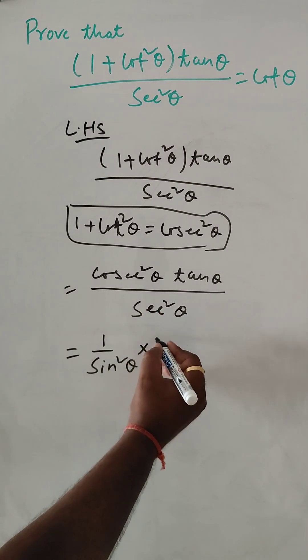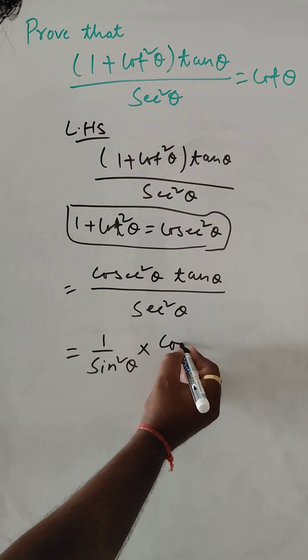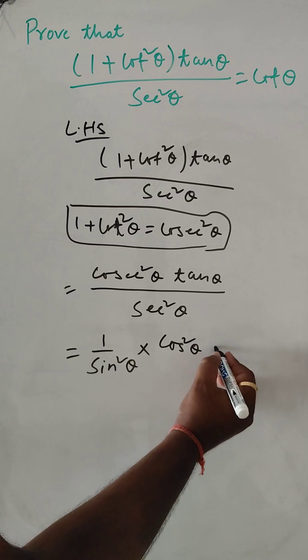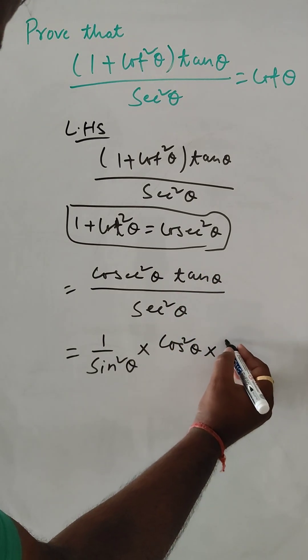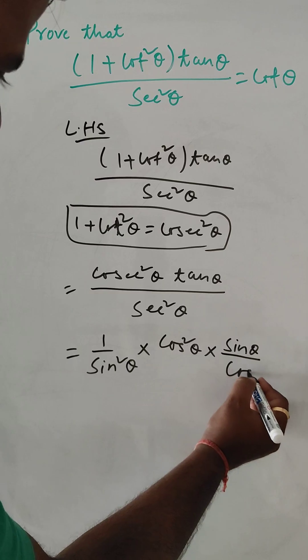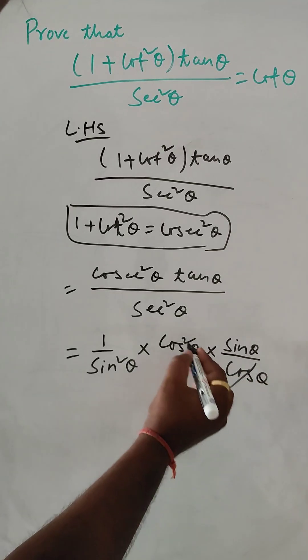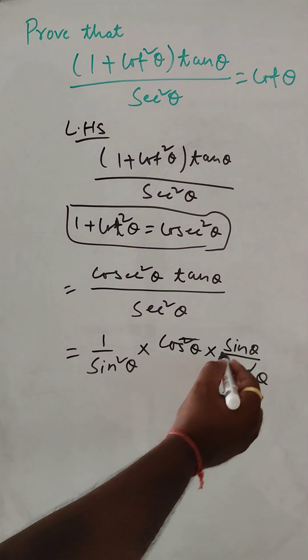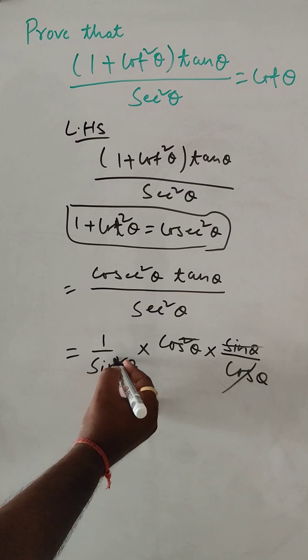And sec²θ is what? 1/cos²θ. And tan is what? sinθ / cosθ. So this and this get cancelled, and from this, this get cancelled.